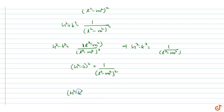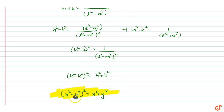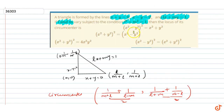Therefore, (h squared minus k squared) squared equals h squared plus k squared. Replacing h and k with x and y, the locus is (x squared minus y squared) squared equals x squared plus y squared. This is our answer, that is option A.